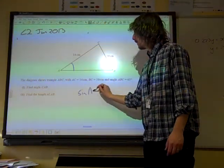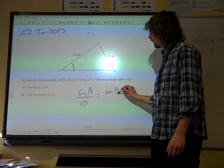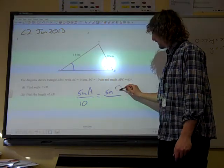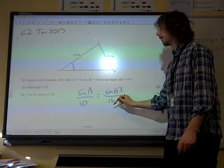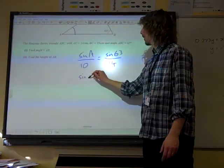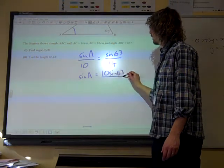We're going to say that sine of A over 10 equals sine of 63, that's a good start, over 14. We're going to rearrange that to get sine A on its own. Sine A is 10 sine 63 over 14.